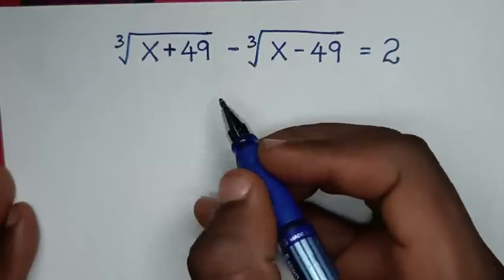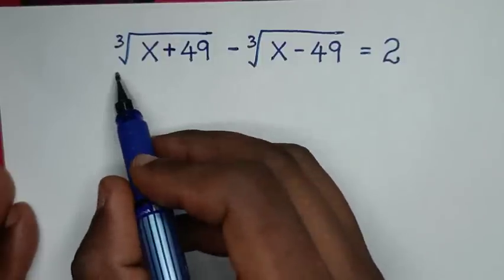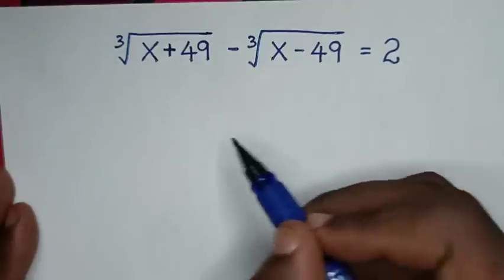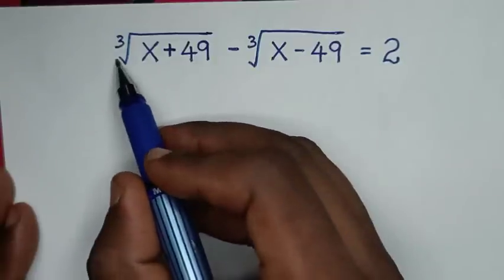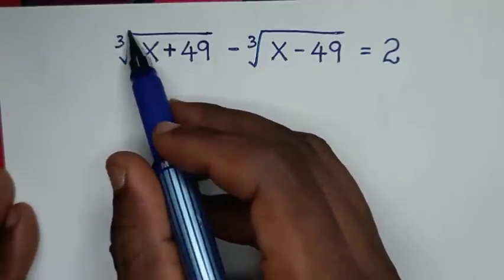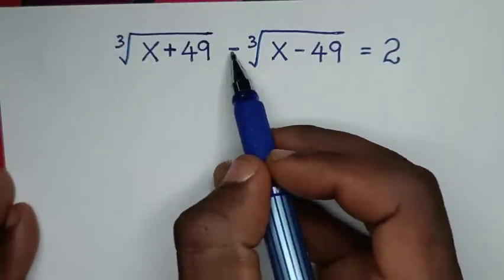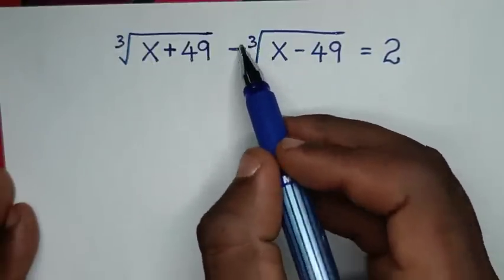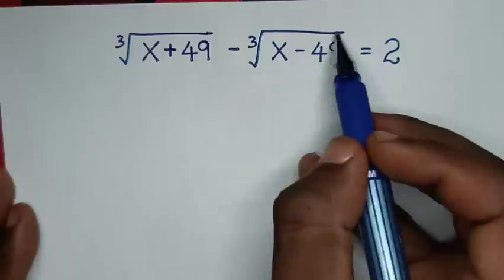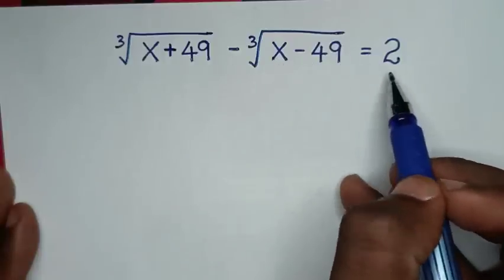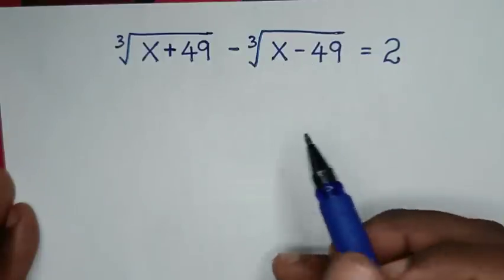Hello, you are welcome to solve this math problem, which is: cube root of (x plus 49) minus cube root of (x minus 49) is equal to 2.